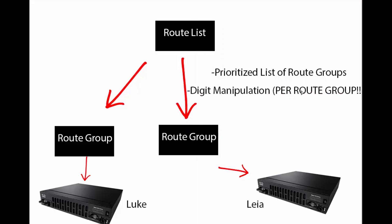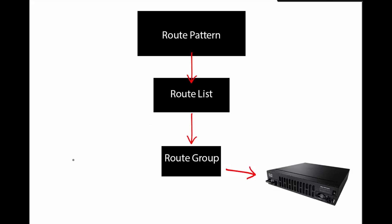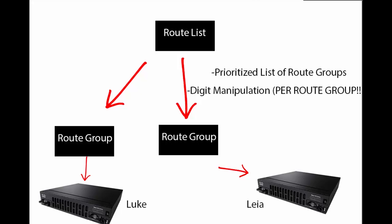That saves us a lot of time and configuration. Instead of having to configure multiple route patterns for gateways that might require different handoffs of digits, we can just create one route pattern and the route list will do everything for us. Remember the hierarchy: we've got route group which contains our devices, route list which is a prioritized list of route groups, and then coming up — the route pattern. A route list also gives you a path to your primary while giving you a backup path to your failover. In our scenario, we have to give Captain Tarkin the ability to call Tatooine, to call Mos Eisley and schedule this team building event.